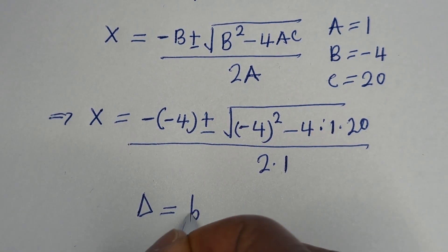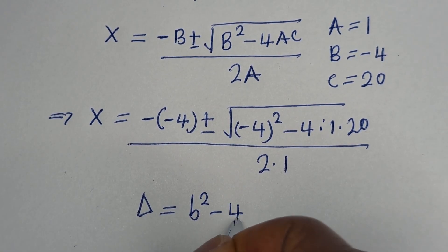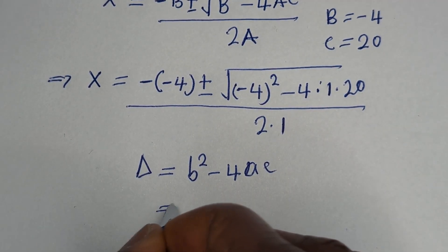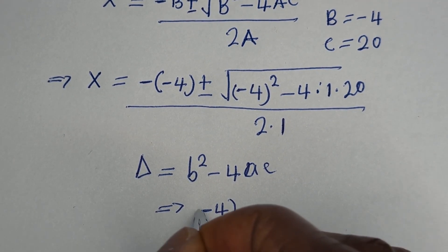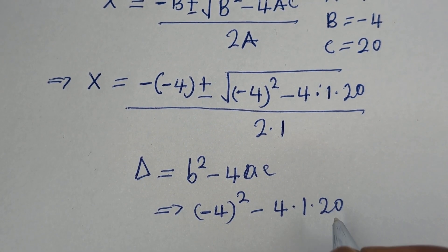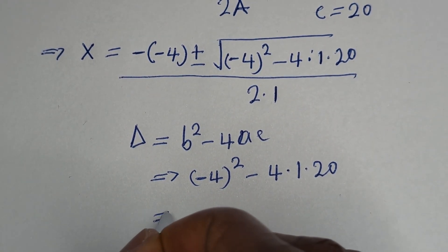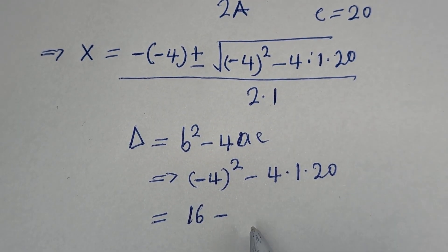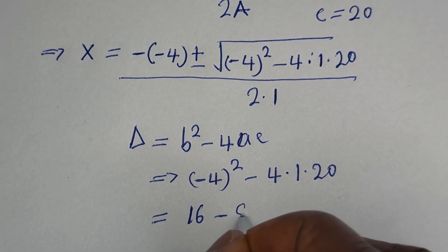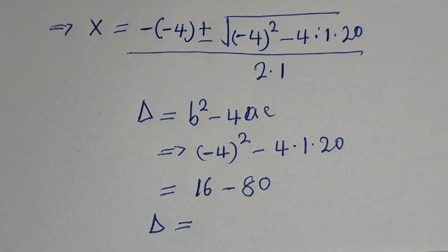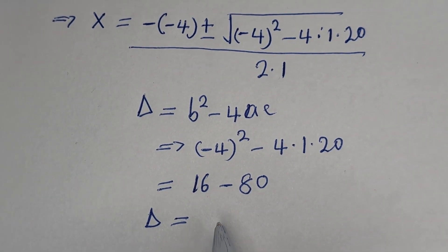The discriminant D is equal to b squared minus 4ac. This is minus 4 squared minus 4 multiplied by 1 multiplied by 20. Minus 4 squared is 16, and 4 multiplied by 1 multiplied by 20 is 80. So discriminant D is equal to 16 minus 80, that is minus 64.